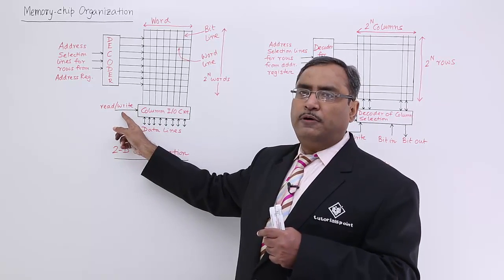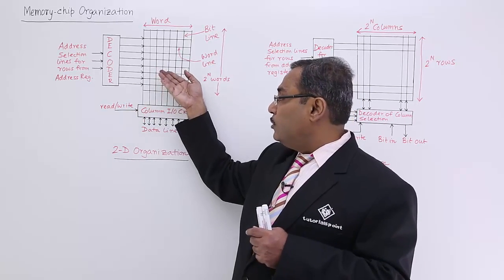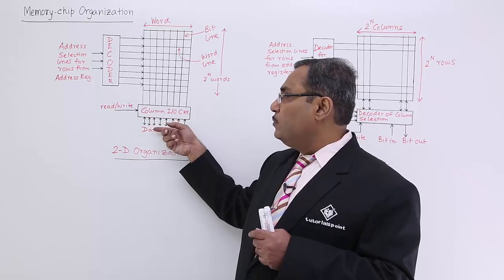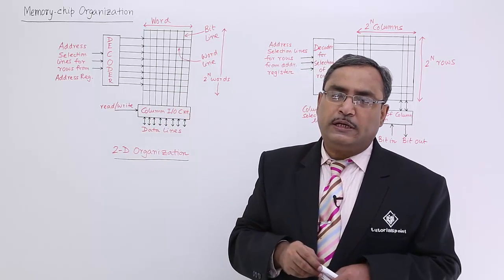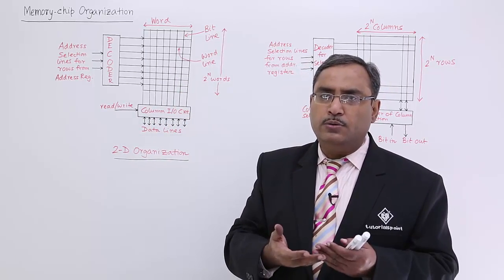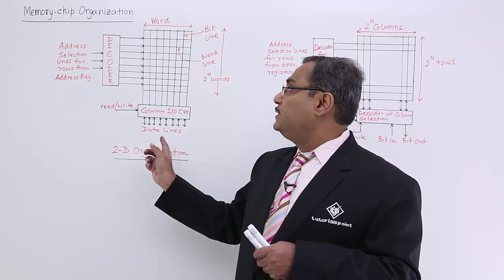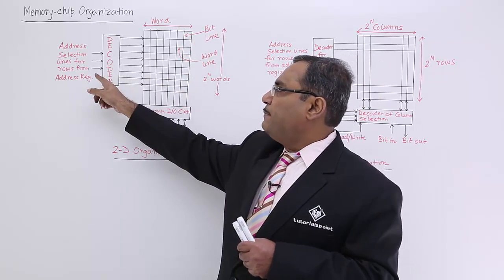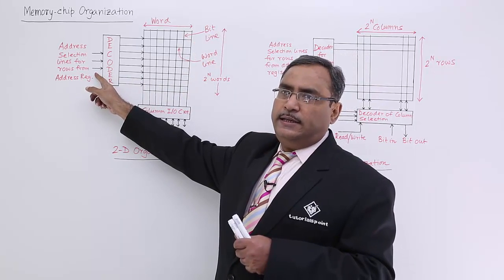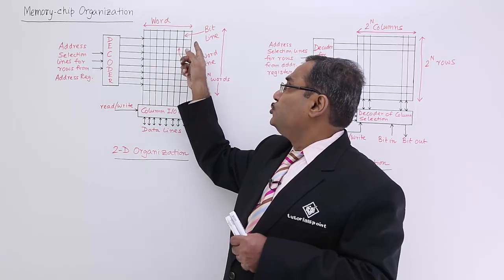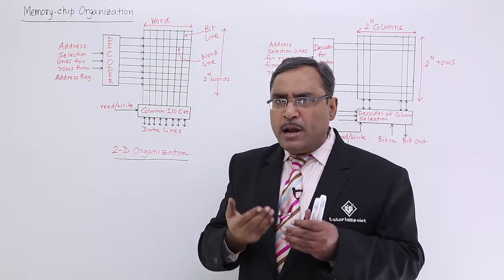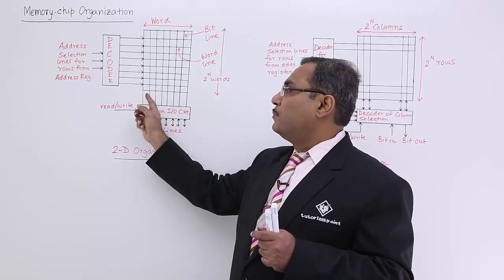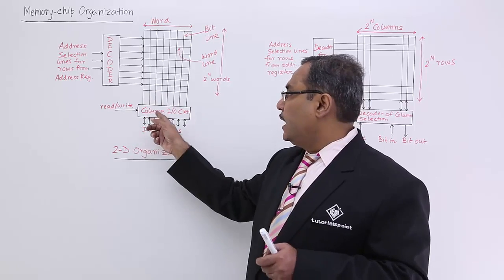If the control line is enabled for read, the data will be coming out through the data lines. If it is write, data will be going in to the respective word to be overwritten. We can have 2 to the power of n number of words if we have n number of select lines in the decoder's input, and n number of output lines through the column IO circuit.